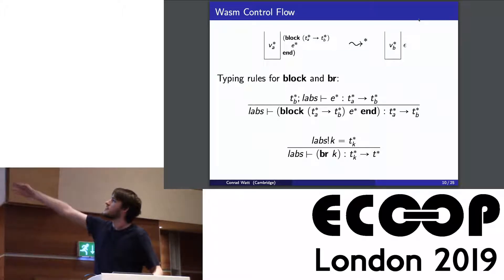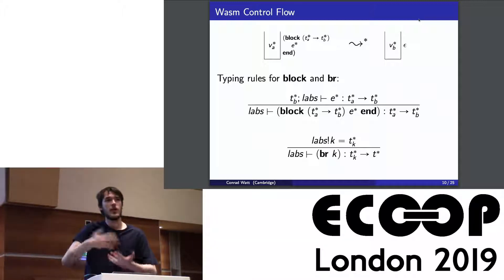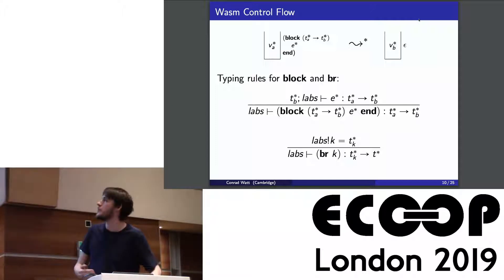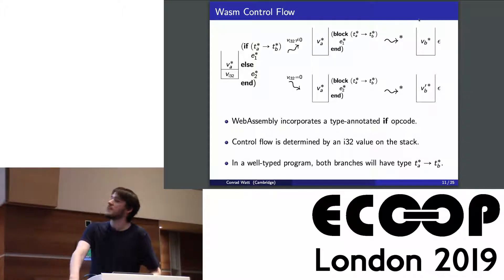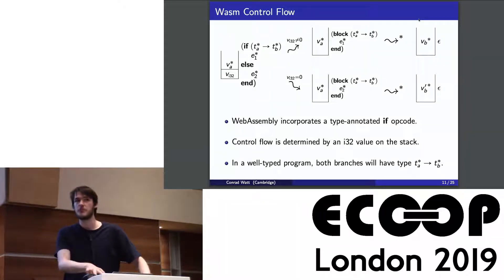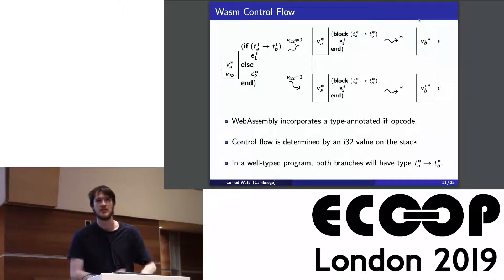For the type system, at the point you execute the BR instruction, you need to make sure you have exactly the things on the stack to satisfy the result type of the block you're breaking to. The typing rule for a block checks that the body has the same type, and you carry a label context recording the type you need at the point of BR execution. The BR typing rule looks inside this label list: if breaking to the kth block, you find the kth recorded type and verify you have that on the stack. Finally, the if opcode executes one of two blocks depending on popping an I32 from the stack — both bodies must satisfy the one type annotation. There's no ability in WebAssembly for different control flow paths to end up with different amounts or types of things on the stack; you always statically know exactly what you have.